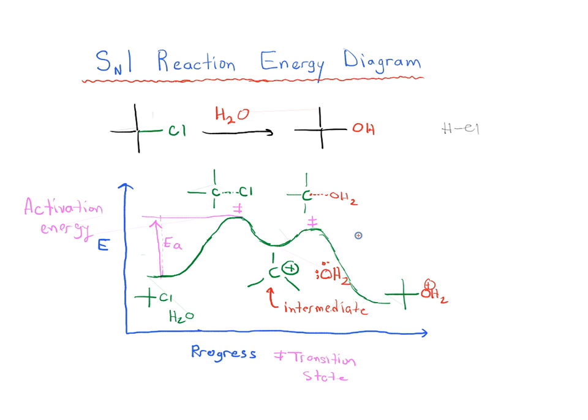And this corresponds to the energy diagram for the SN1 reaction. Subsequently, there is going to be an acid-base reaction where we're going to remove a proton from the OH2 to give us the neutral alcohol, but that isn't really considered part of the SN1 reaction itself. That's an acid-base reaction. So, we're going to leave that out of our SN1 reaction energy diagram here.